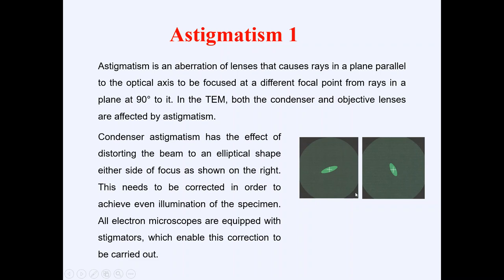Condenser astigmatism has the effect of distorting the beam to an elliptical shape, and this can be seen here on either side of the focus. This needs to be corrected in order to achieve even illumination of the specimen. All electron microscopes are equipped with stigmators which enable these corrections to be carried out, in order to deal with the astigmatism of the condenser and objective lenses.